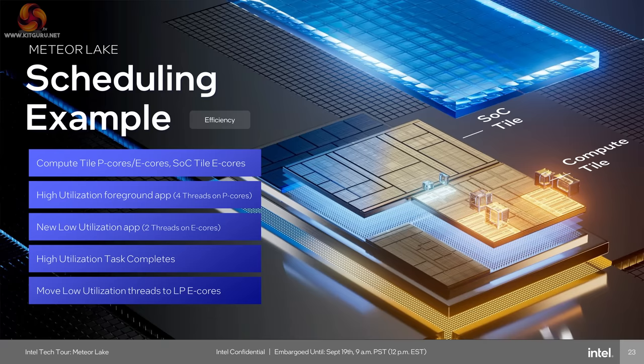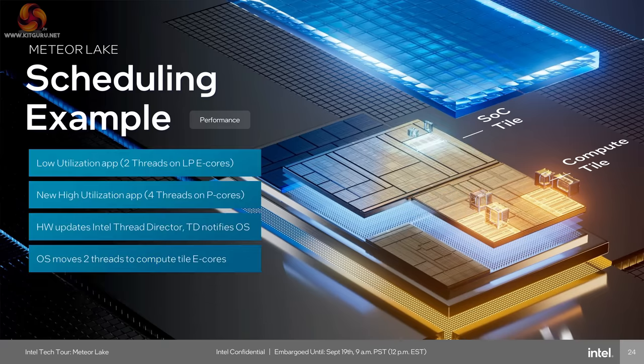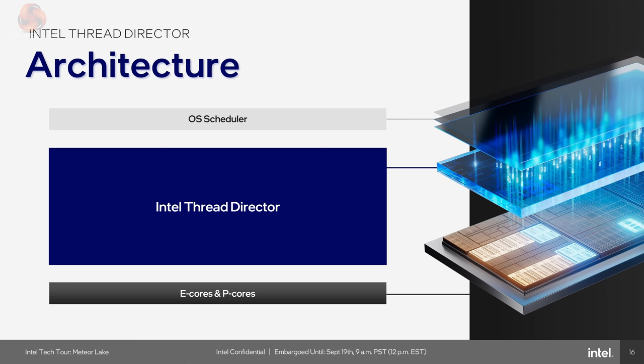The second part is a table in memory space. When the system boots as a hybrid system, the OS initializes that memory space and hardware fills in information — for a given class of work, which core is most performant and which is most efficient. Hardware populates all that information, and the OS reads it and combines it with its own knowledge: priority, quality of service, foreground/background state, AC or DC power, different power plans. Thread Director provides stats visible only to hardware that the OS would otherwise have no access to, augmenting OS intelligence.